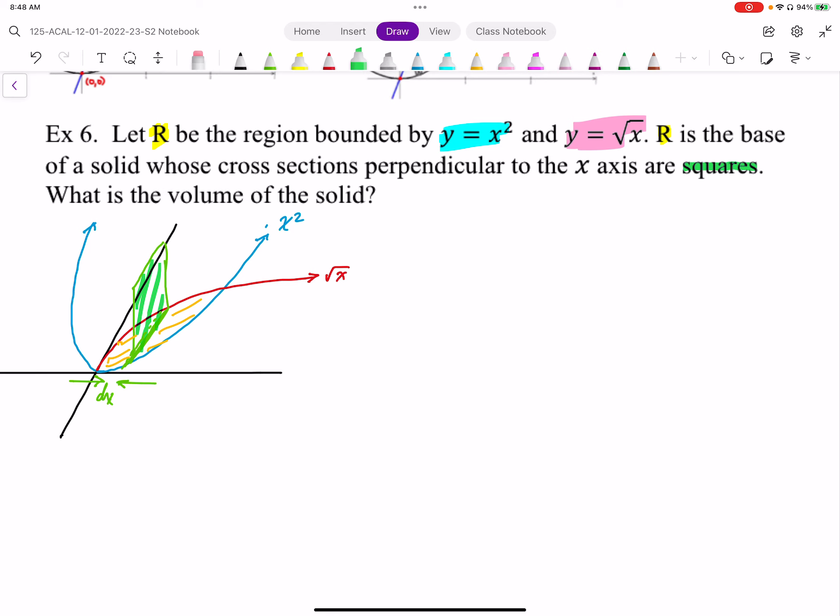If we take a look at the slice perpendicular to x-axis, it's going to have a thickness of dx, and the area of the slice is going to be a square. And then we're going to integrate all those slices to get the volume. In general, volume is equal to the area times thickness.